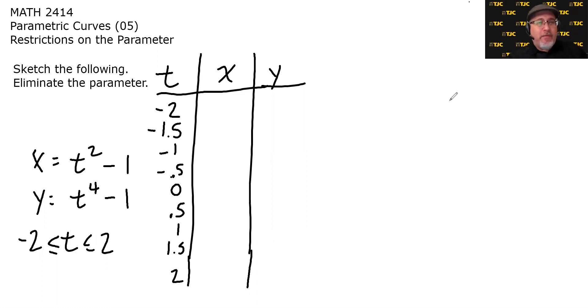So we'll start at the bottom, plugging in t equals 2. We put 2 in for the t and x equals t squared minus 1. We get 2 squared minus 1, which is 4 minus 1, which is 3. And if we put 2 into the y equation, we get 2 to the 4th minus 1, which is 15. If we put 1.5 into the x equation, 1.5 squared minus 1 is 1.25. And if we do 1.5 to the 4th power, and then subtract 1, we get 4.0625.